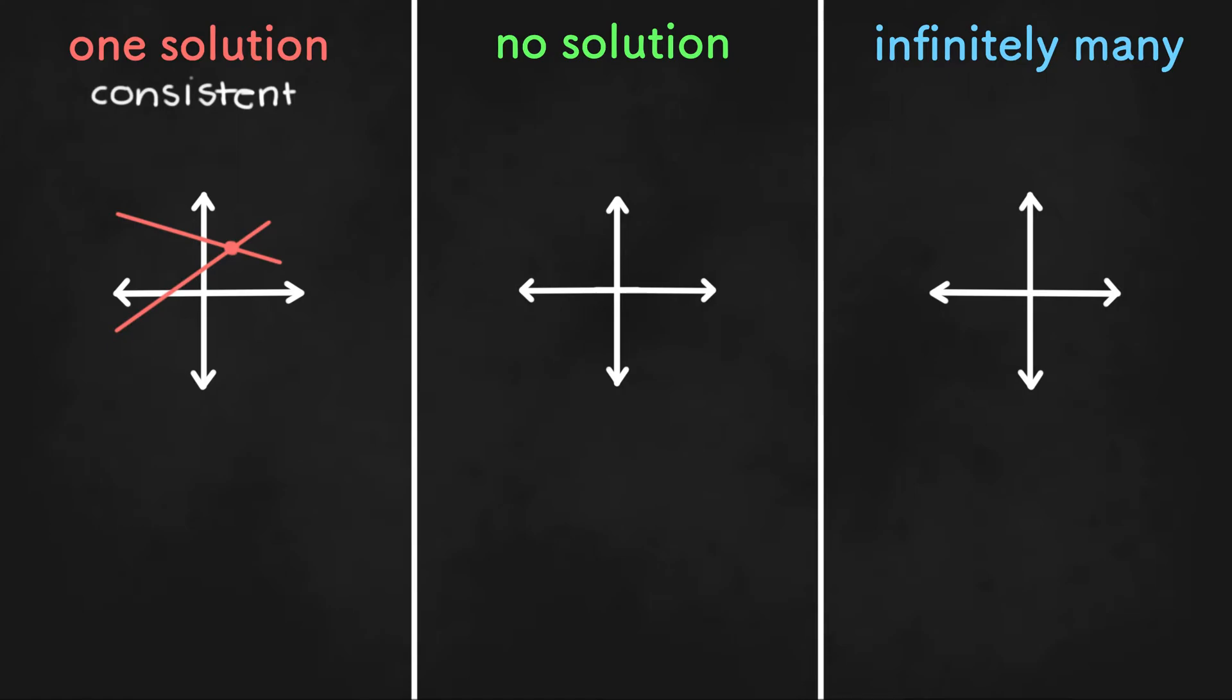Now, an equation with no solution will be where two or more lines never intersect. And that is when the lines are parallel. So if we have two parallel lines like this, the lines never intersect, and therefore there is no solution. And equations or system of equations that have no solution are called inconsistent.